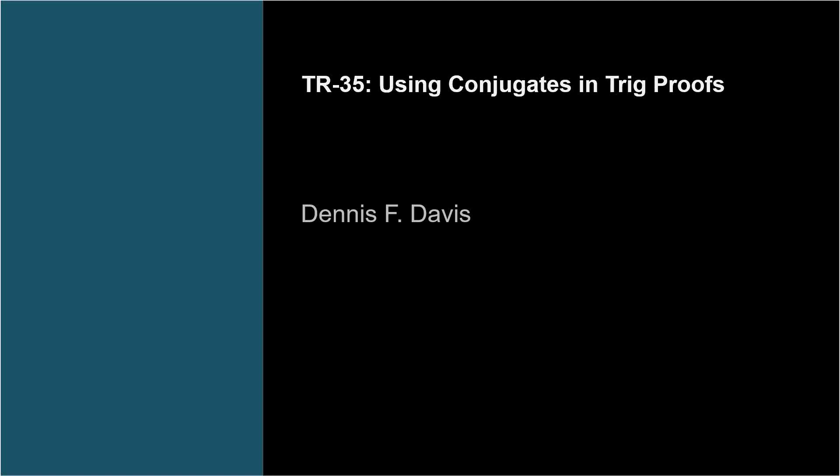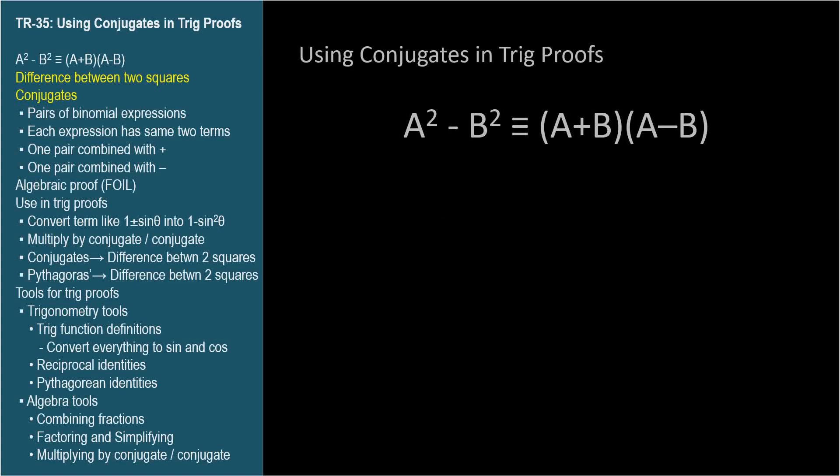I want to show you another tool that you should have in your tool belt when proving trig identities. In video TR-32, when I described what an identity is, I used this example: a squared minus b squared equals a plus b times a minus b. You may already know that this identity is called the difference between two squares because of the left-hand side.